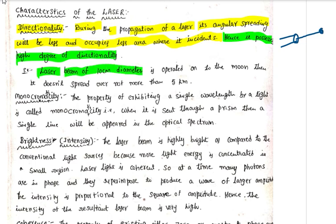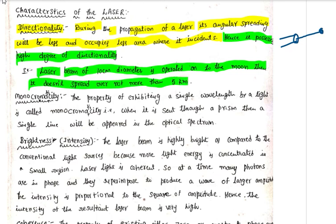For example, a laser beam of 10 cm diameter operated onto the moon doesn't spread over more than 5 km.